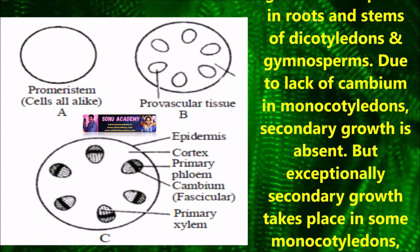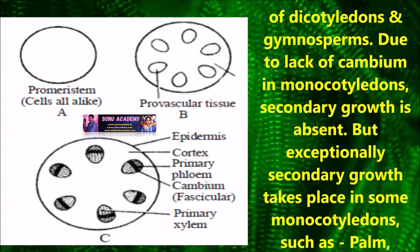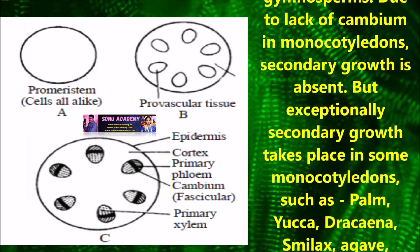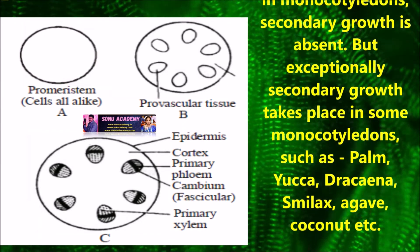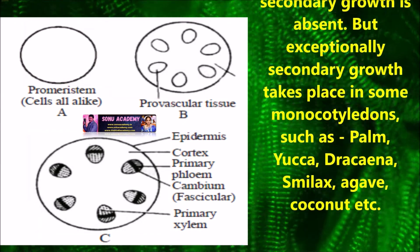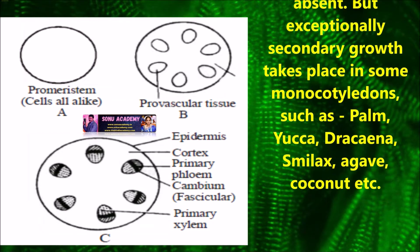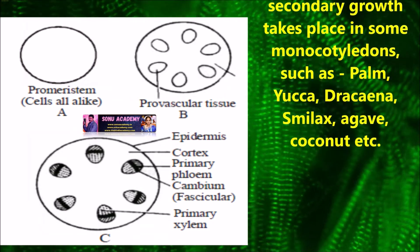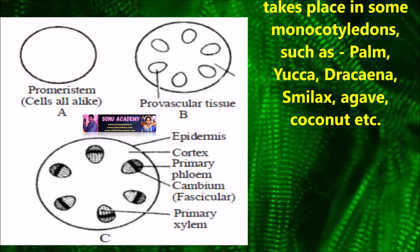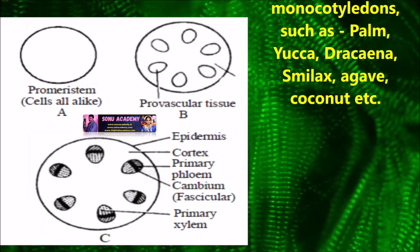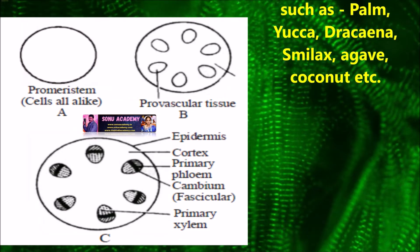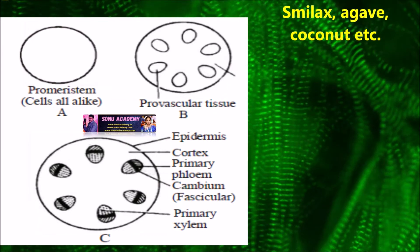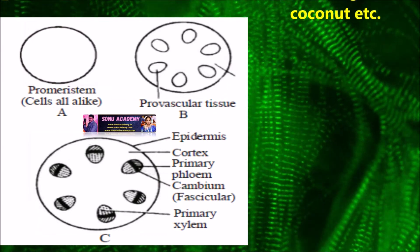Due to lack of cambium in monocotyledons, secondary growth is absent. But exceptionally, secondary growth takes place in some monocotyledons such as plum, yucca, dracena, smilax, agave, coconut, etc.